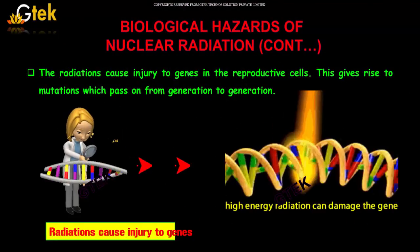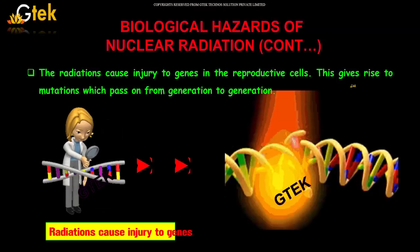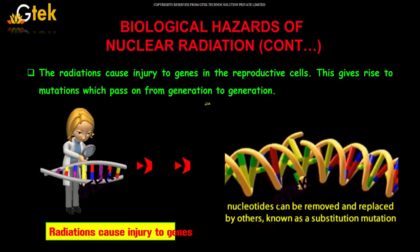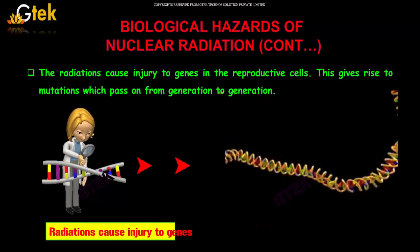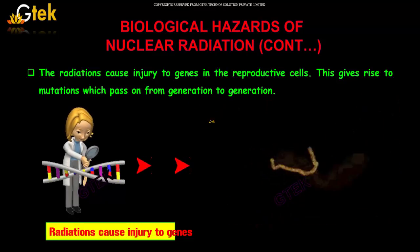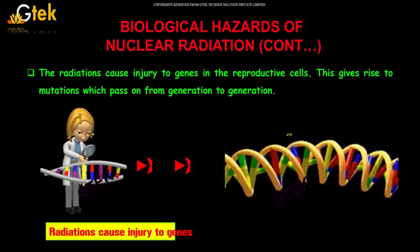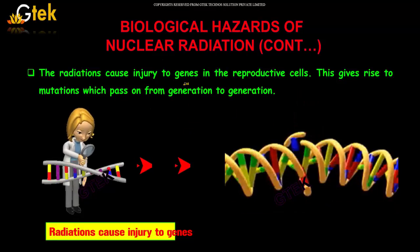Radiation will cause injury to genes in the reproductive cells. This gives rise to mutations which pass on from generation to generation — for example, some diseases or conditions can pass from father to child. This is the genetic effect caused by radiation.